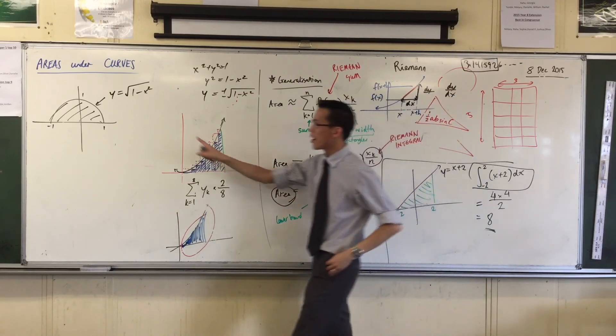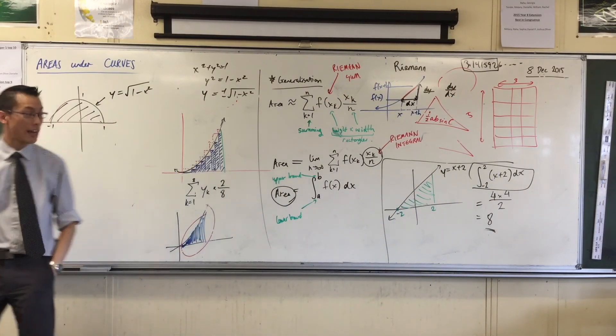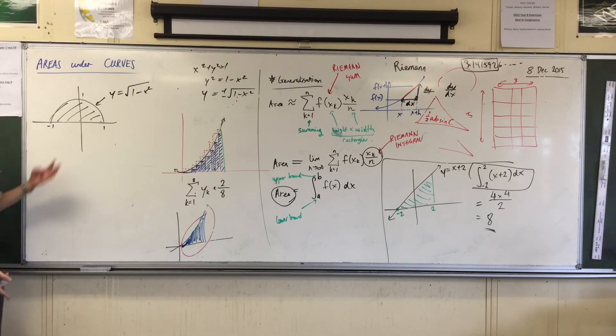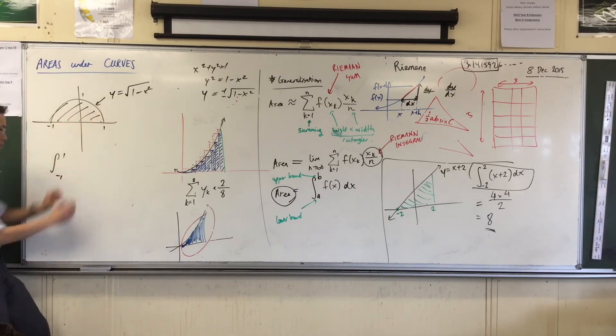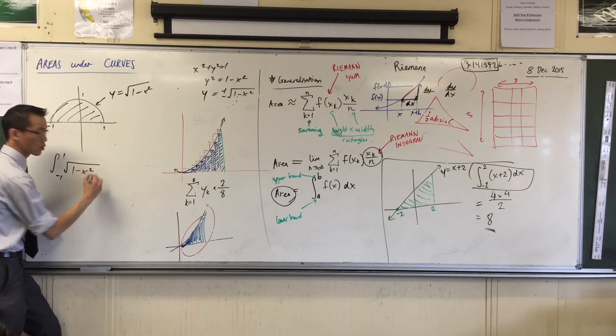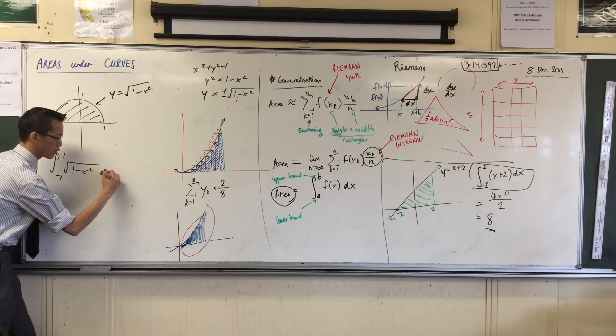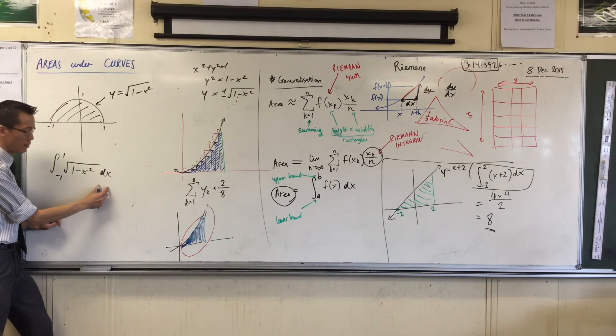So how do I, number one, state, and then number two, calculate, evaluate, the area under this curve? Well, firstly, it's this integral from negative one to one of this function, square root of 1 minus x squared, and I'm doing it with respect to x. There's my little width there.